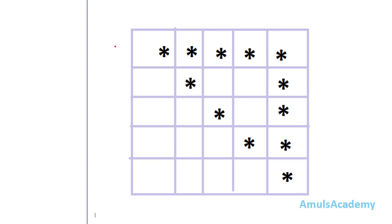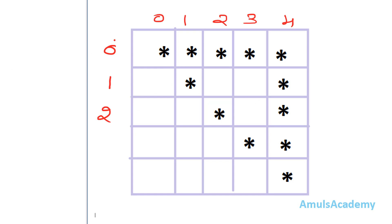That's because we print stars like this: in row 0 we check for columns 0, 1, 2, 3, 4. After printing stars in row 0 we go to the next line and check row 1 with columns 0 through 4. Again we go to the next line and in row 2 we check columns 0 through 4. That's why first we write the for loop for row and inside that we write the for loop for column.